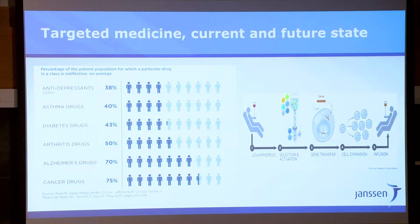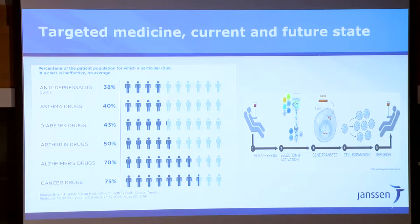Talking about targeted populations — it's an evolution. Some drugs are still given very broadly, like antidepressants, and they'll work on 30% of patients. But in oncology today, a given drug is now targeted to a well-defined, genetically defined group of patients that's going to actually benefit from that drug or a combination of drugs.